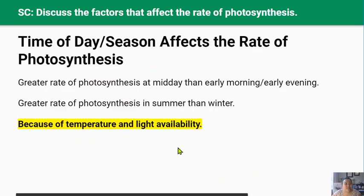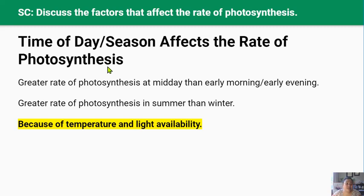The time of day and the season also affect the rate of photosynthesis because they determine light intensity and temperature. The rate of photosynthesis is greater at midday than in early morning or evening, and there is little to no photosynthesis at night. The rate is also greater in the summer months compared to the winter months.